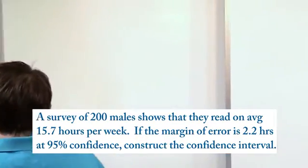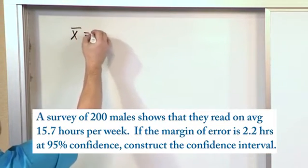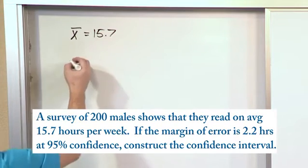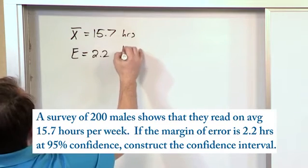So let's write things down. We know from the problem that the sample mean is equal to 15.7 hours. That is what we have surveyed, 200 males. And we also know the margin of error, E, we said we would denote that with E, is 2.2 hours.